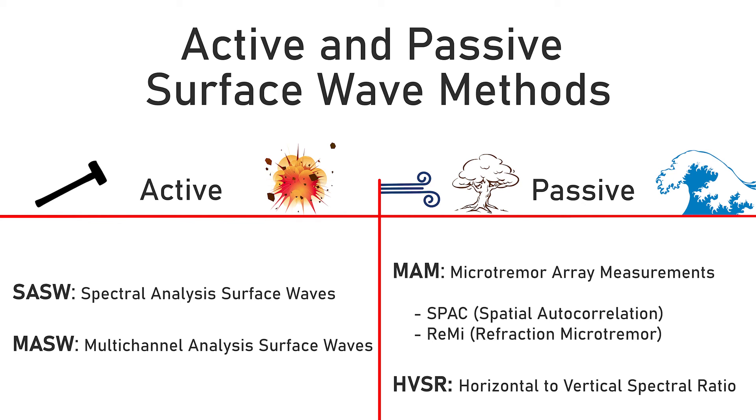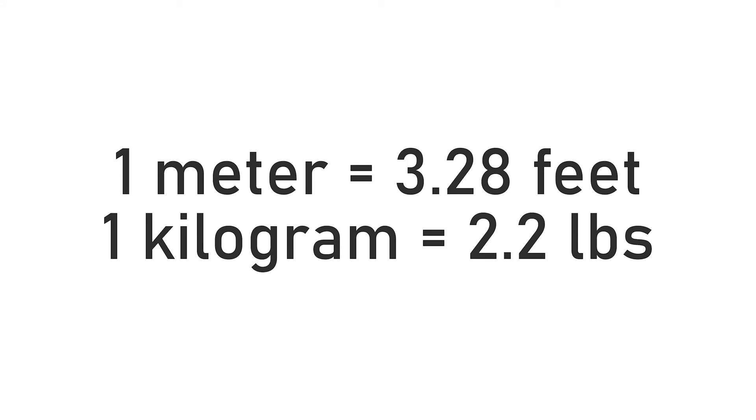Well known passive seismic methods like REMI and SPAC are classified as MAM, or Microtremor Array Measurements, and the other well known passive seismic method is HVSR, or Horizontal to Vertical Spectral Ratio. All the units in these training videos are metric.